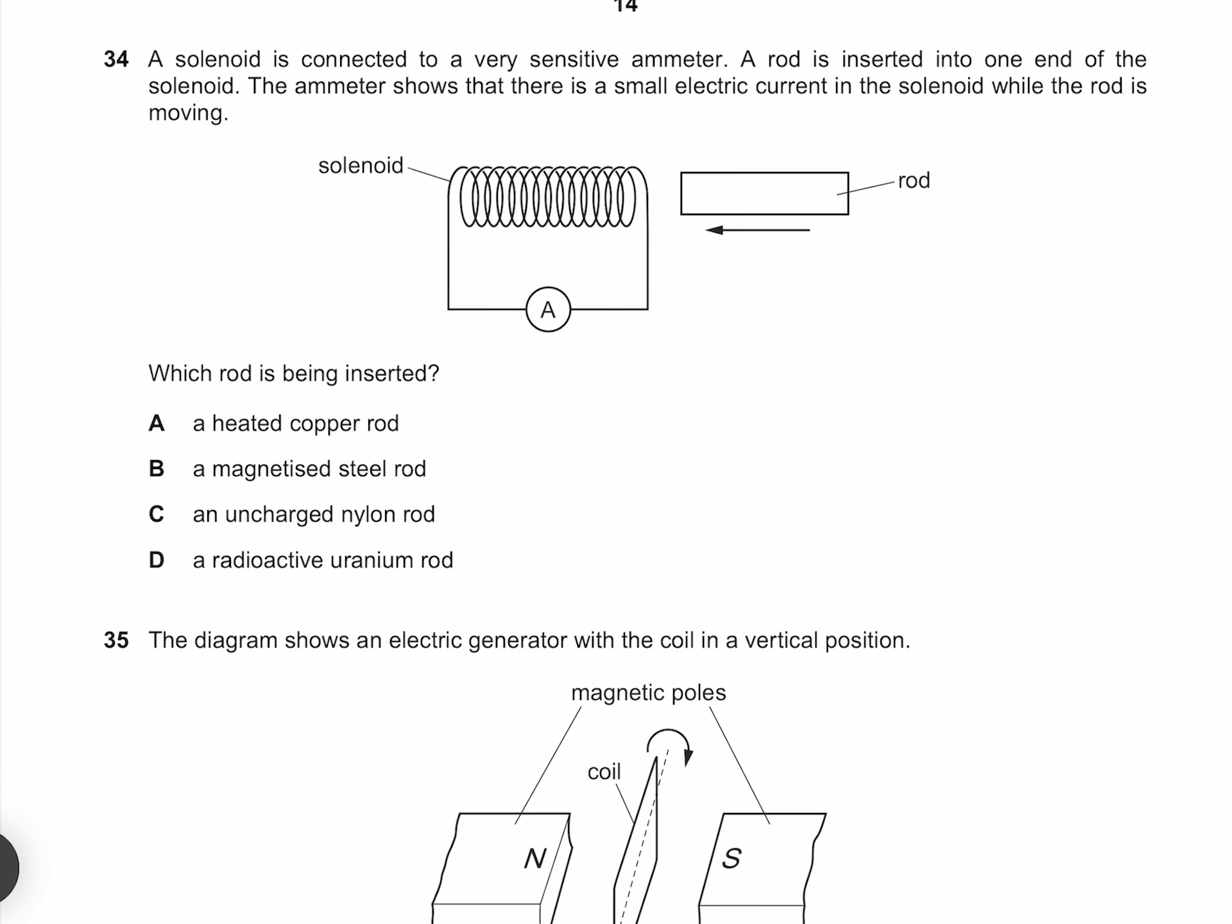A solenoid is connected to a very sensitive ammeter. A rod is inserted into one end of the solenoid. The ammeter shows that there is a small electric current in the solenoid while the rod is moving. Which rod is being inserted? The effect here is electromagnetic induction, which as the name suggests requires that the material be magnetic. And so our answer is B.